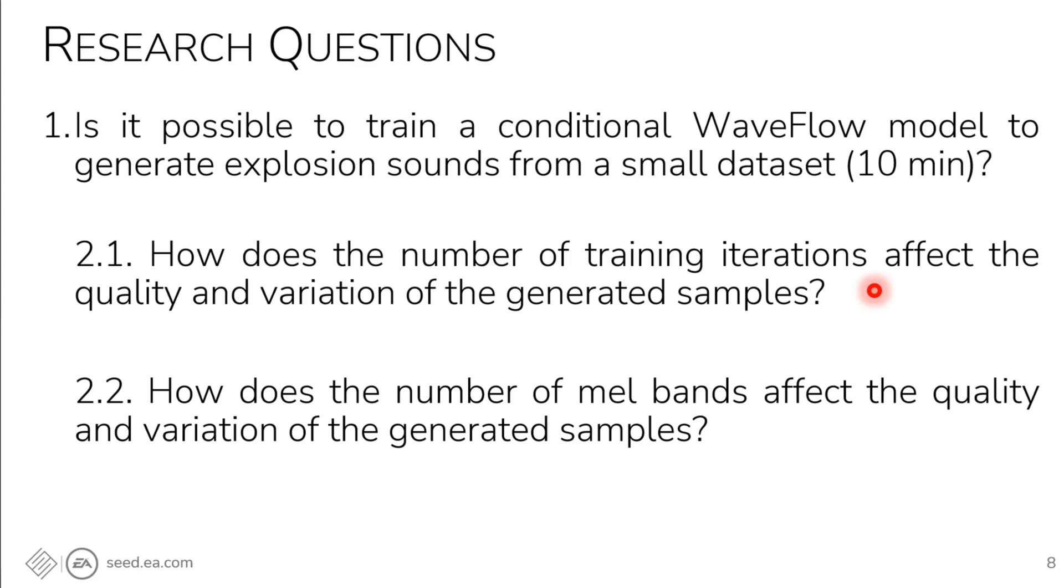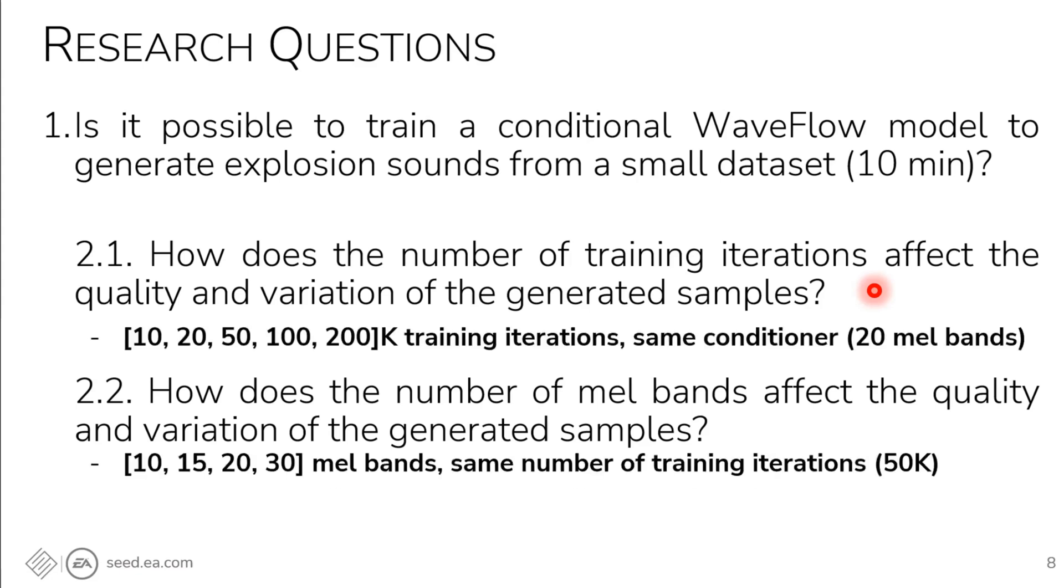And to do so, we put forward these two questions. So how are these qualities affected by the number of training iterations and by the number of mel bands used as conditioners? And to do so, we train several models. We split them into groups. And to answer the first question, we train a model with 20 mel bands and we study the performance across different points in training. To answer the second question, we train models with 10, 15, 20, and 30 mel bands. And we study their performance under a fixed iteration, in this case of 50,000.